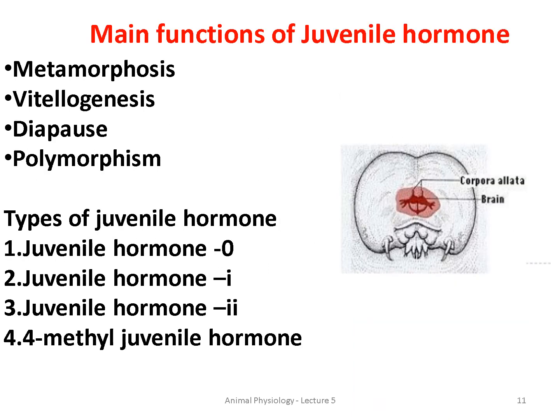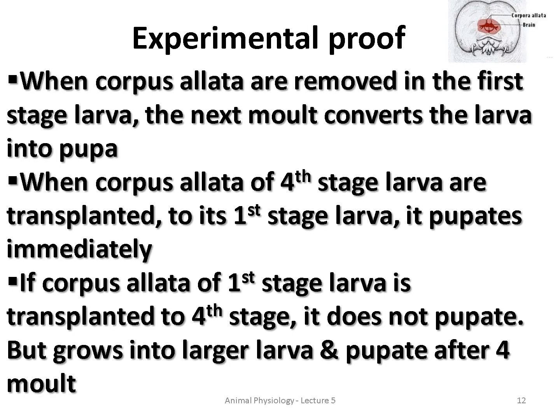The main functions of Juvenile Hormone include metamorphosis, vitellogenesis, diapause, and polymorphism. In addition, there are different types of Juvenile Hormones: Juvenile Hormone 0, Juvenile Hormone 1, Juvenile Hormone 2, Juvenile Hormone 4, and Methyl Juvenile Hormones.